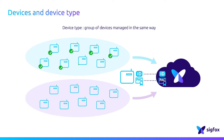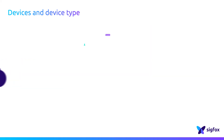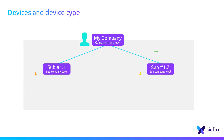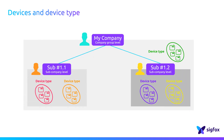In real life, users register devices in batch, then assign a device type to these groups. Then they link these groups to an active BSS order or contract to get access to the Sigfox connectivity service. That's all there is to do to enable objects to communicate.